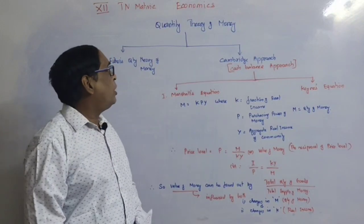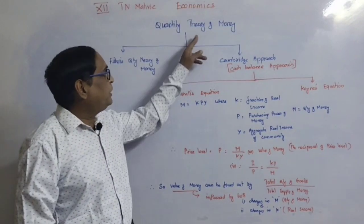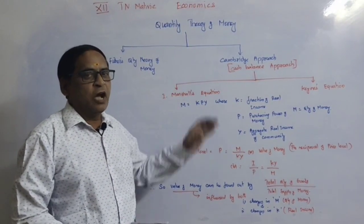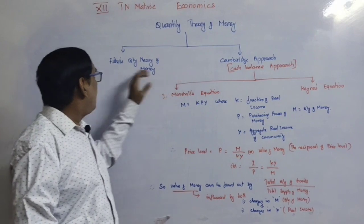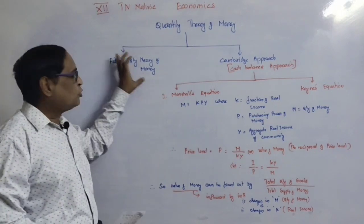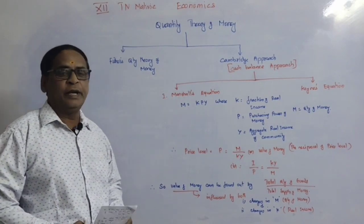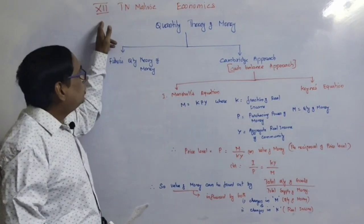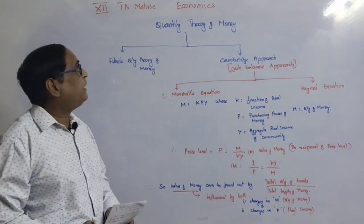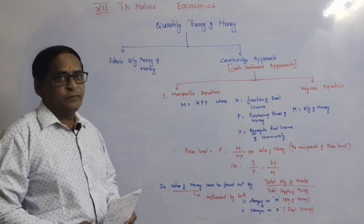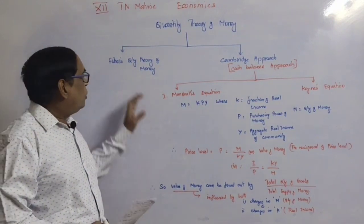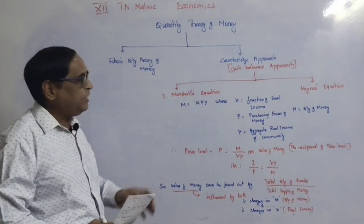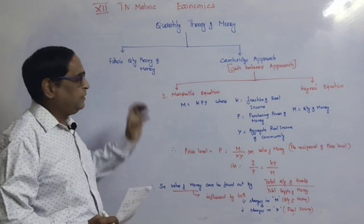Today we are going to see about the quantity theory of money. We have already seen about Fischer's quantity theory of money. This is for Plus 2 TN metric economics. We had already explained about Fischer's quantity theory of money.